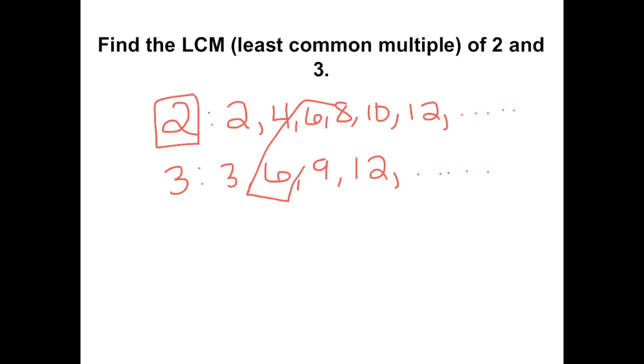And because we can already see that they have a least common multiple of 6, we don't need to continue making a list of multiples. So the least common multiple of 2 and 3 is 6.